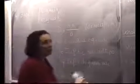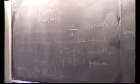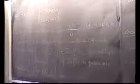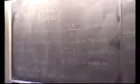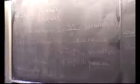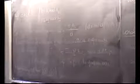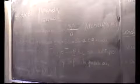Se n1 e n2 sono coprimi esiste sempre la soluzione. Se invece n1 e n2 non sono coprimi, dipende da chi sono b1 e b2: a volte la soluzione c'è, a volte non c'è.